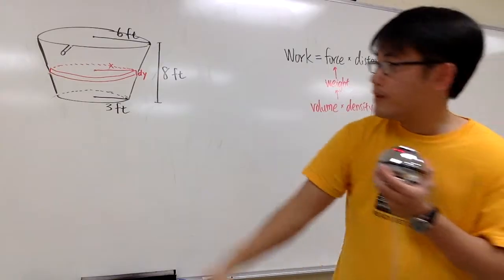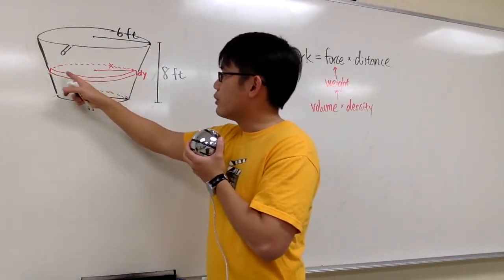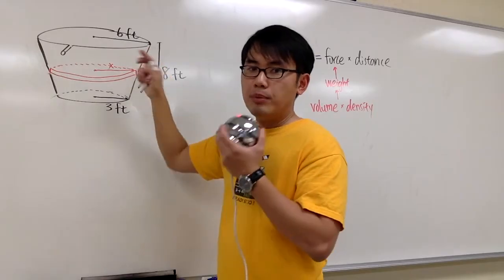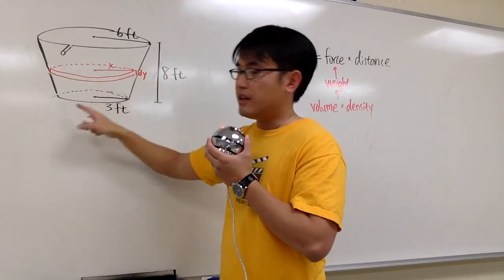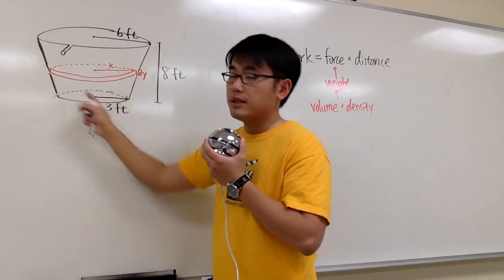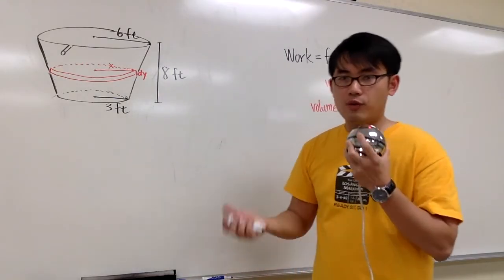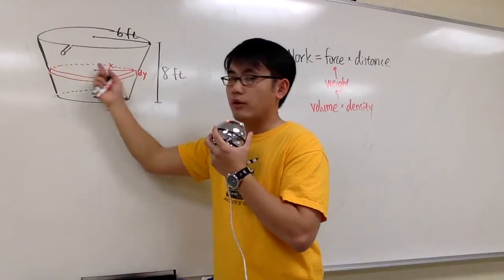As you can see, if I draw the slice up here, that slice would be bigger than this slice. And if I draw the slice down here, that would be a smaller slice. So it all changes. We have to figure out a formula for the volume of this slice. It changes because the radius changes.